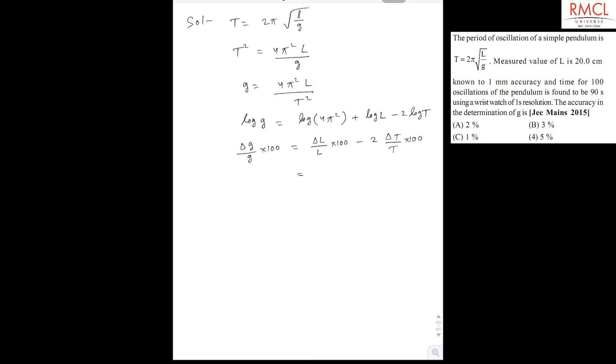So Δl is 0.1/20 × 100 and time period is decreasing. So here the percentage change will be negative, so this minus and this minus will be plus. So it is 2 × 1/90 × 100, so it becomes 0.5 + 2.2 and it equals 2.7, approximately equal to 3.